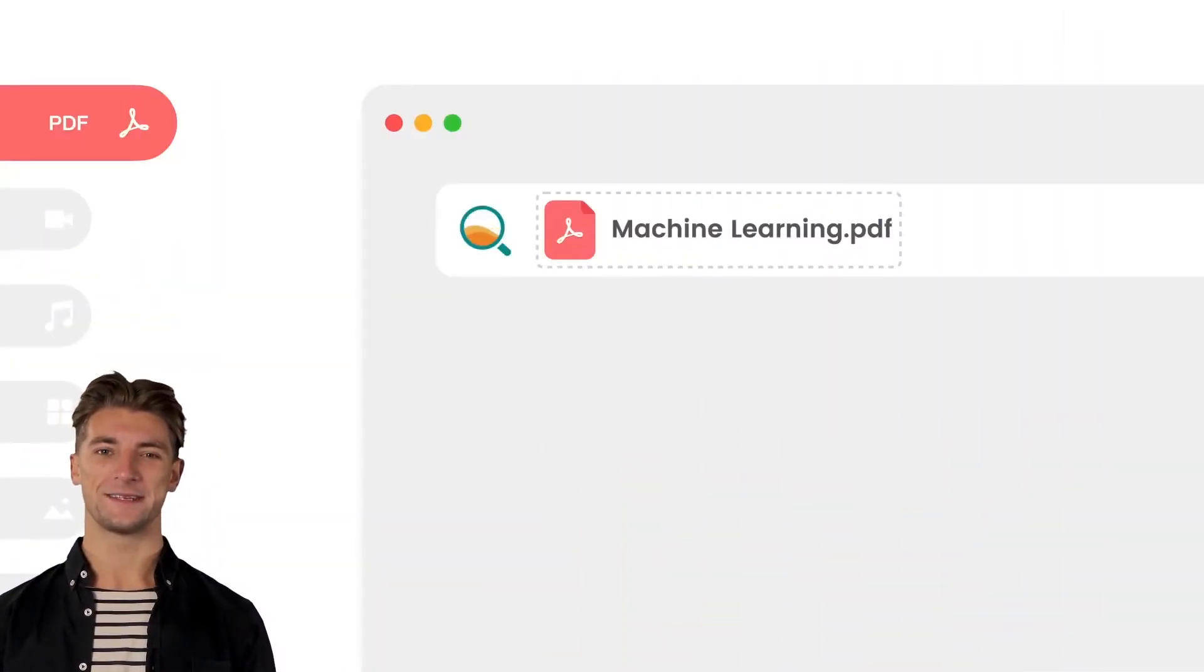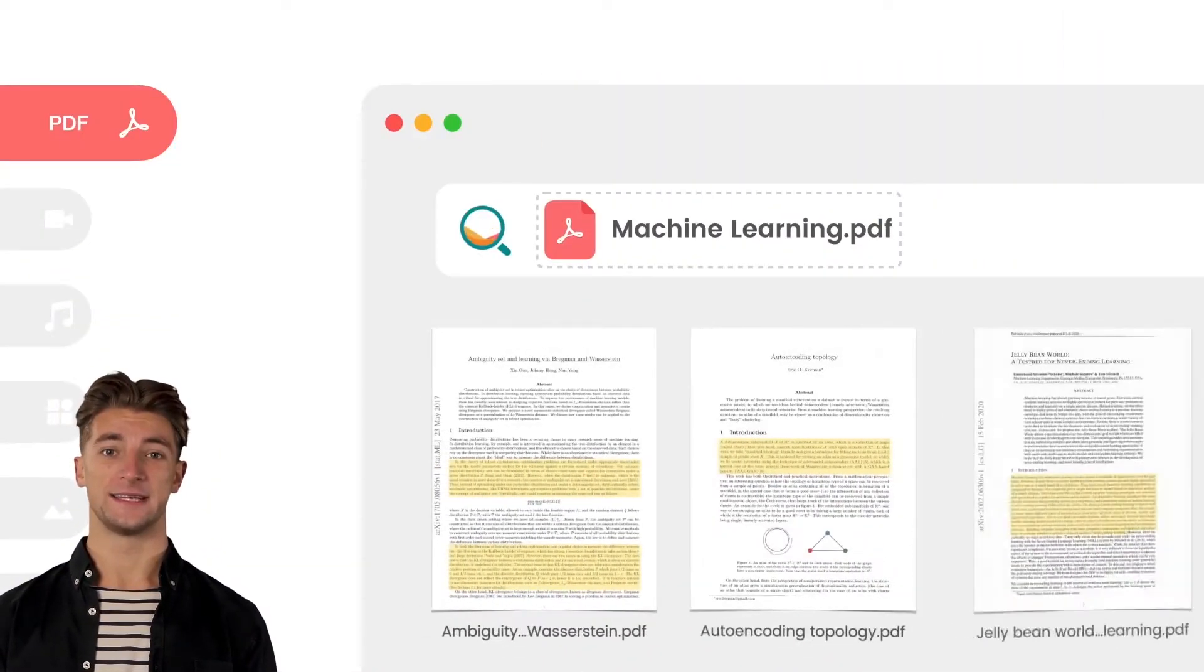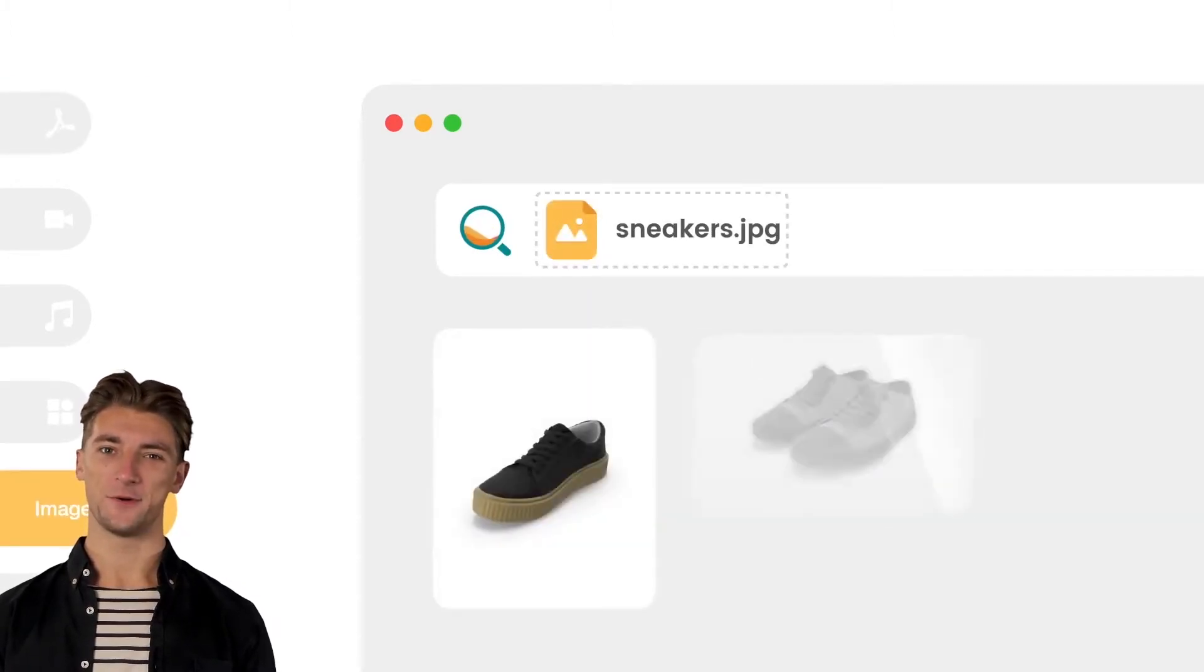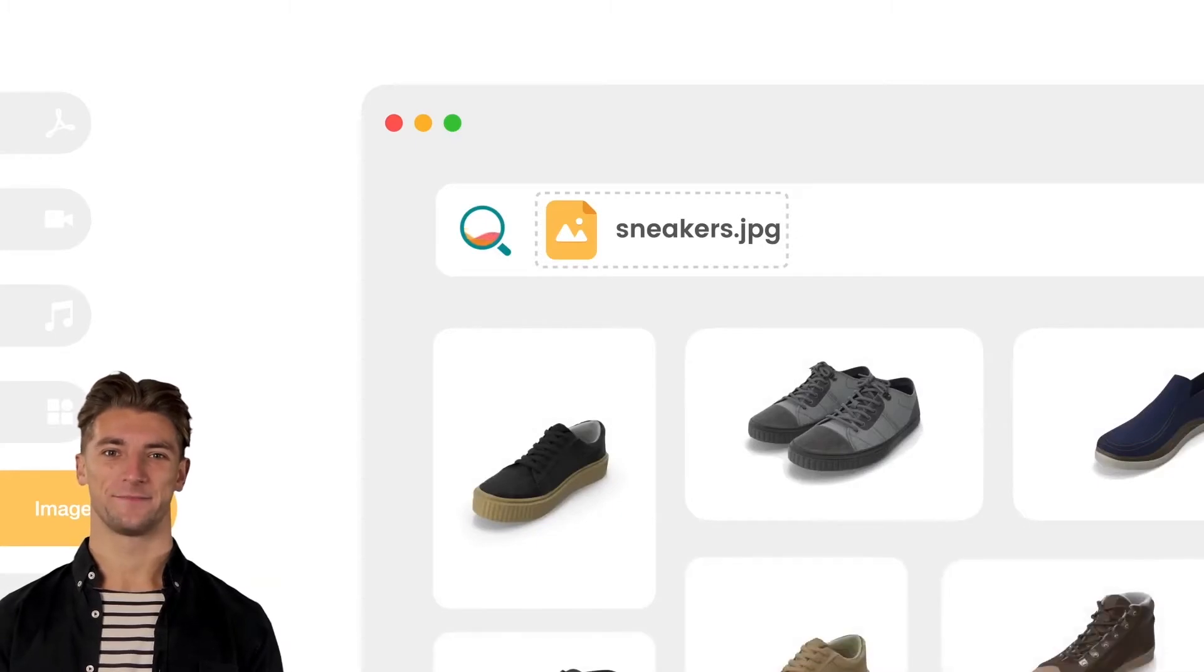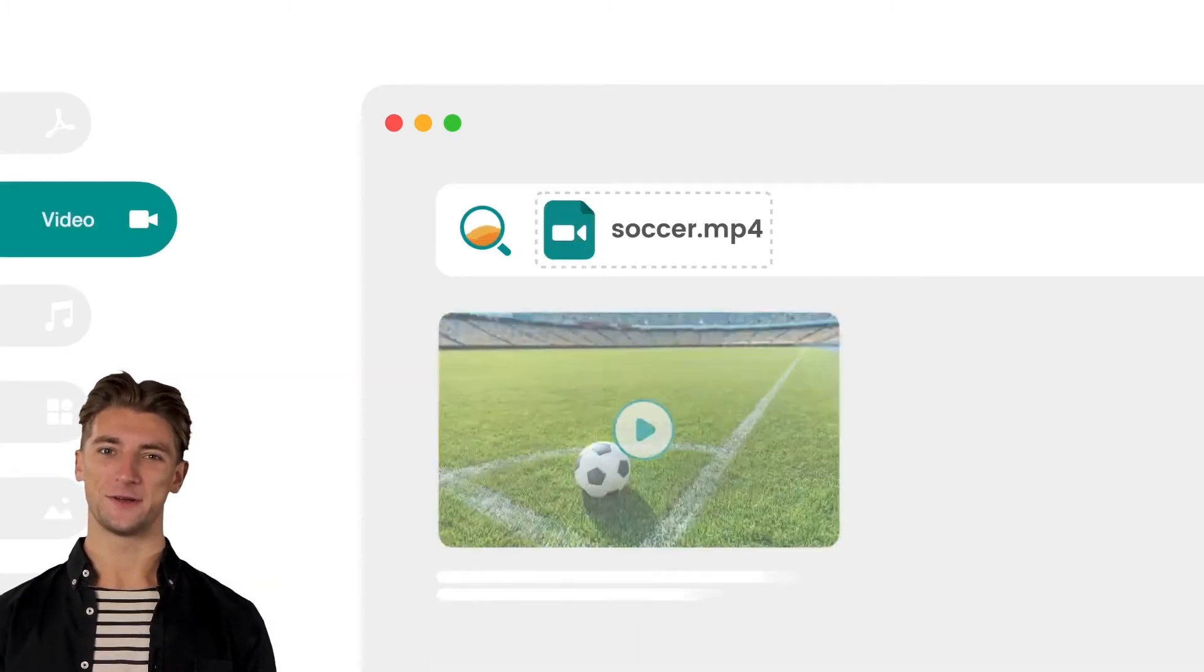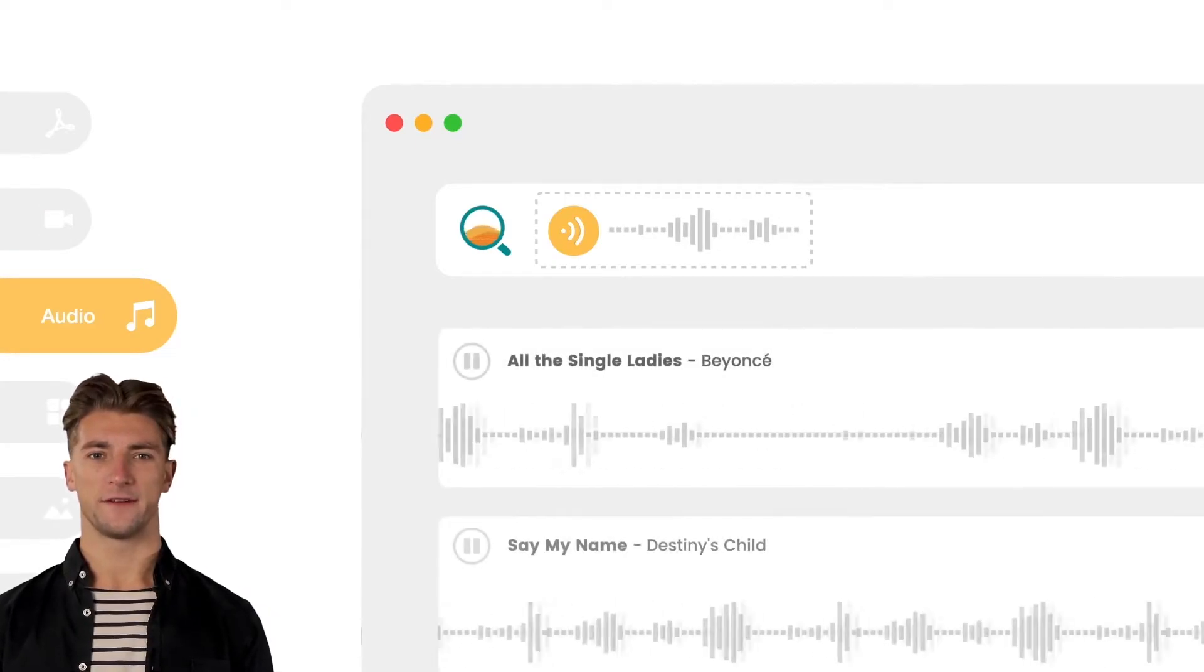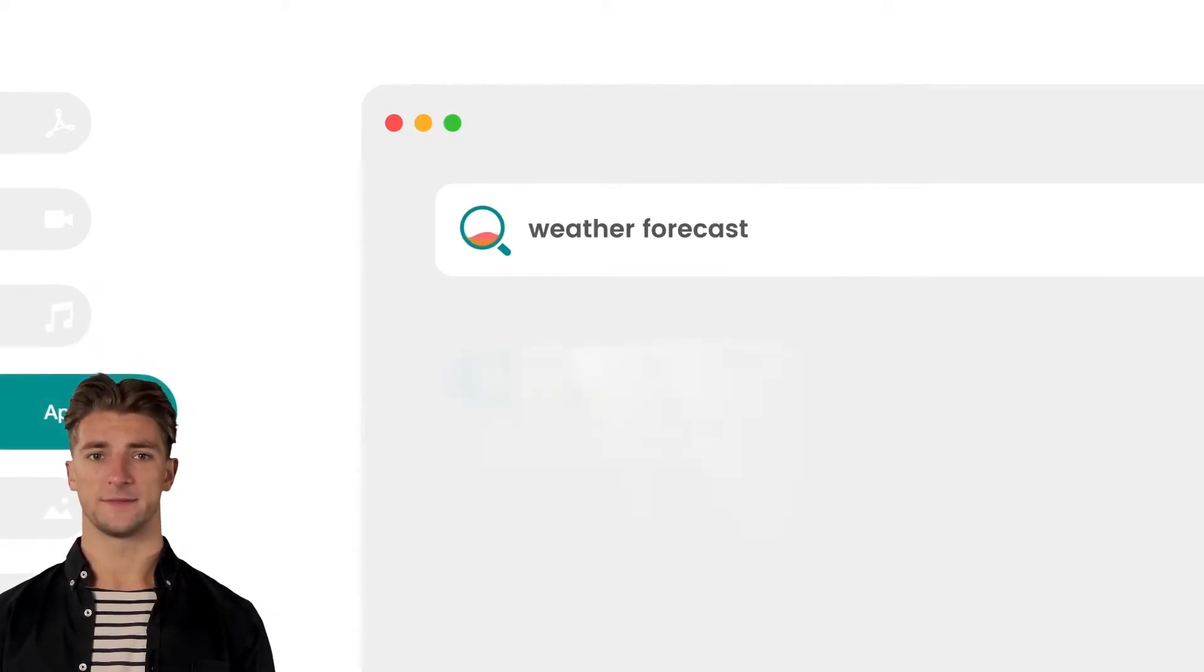What if you could ask any question to a library of academic papers, or search for the perfect pair of shoes by uploading a picture of the sneakers you love? In short, what if you could use any kind of data to find similar data? With neural search you can do all of that and more.